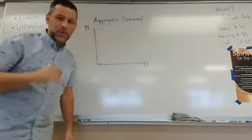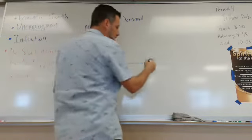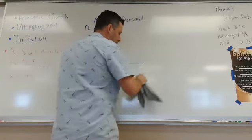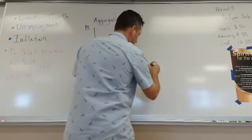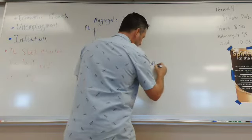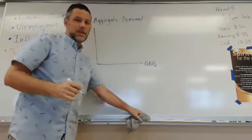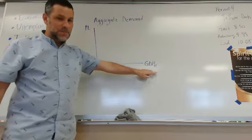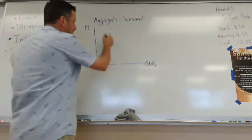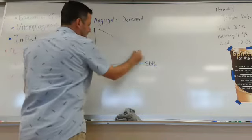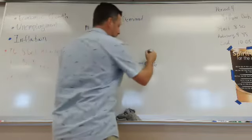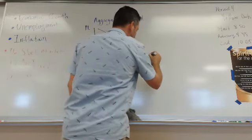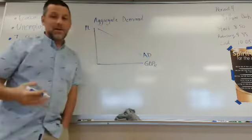So we can put O for output or more commonly, I'm just going to put real GDP. So we're going to draw it like this. We've got price level up here, I've got real GDP here, and then our aggregate demand curve is going to be downward sloping. So that right there is, and we're going to label it AD for aggregate demand.